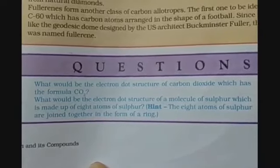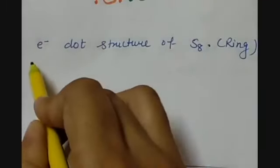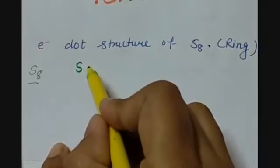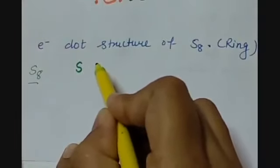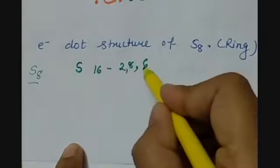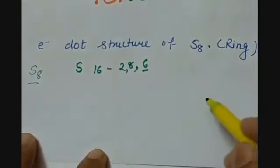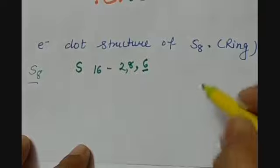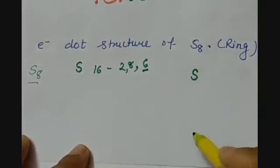Question number 2 is: what would be the electron dot structure of a molecule of sulfur, which is made up of 8 atoms of sulfur? The hint given is that 8 atoms of sulfur are joined together in the form of a ring. As we have S8 molecule and sulfur has valency of 6, its atomic number is 16, so electronic configuration is 2,8,6 — giving 6 valence electrons. Let us make the S8 ring structure.